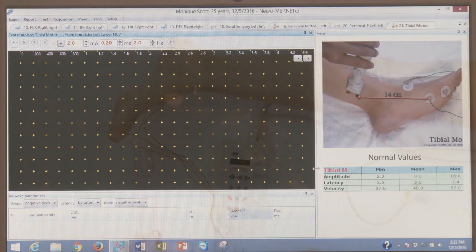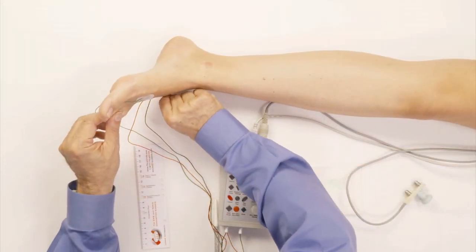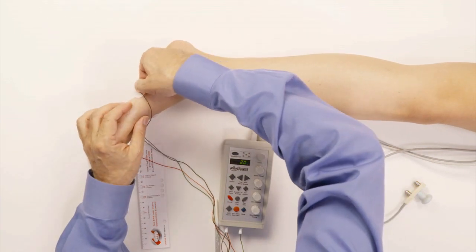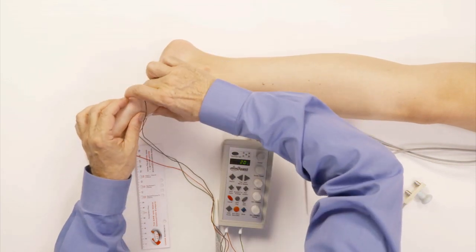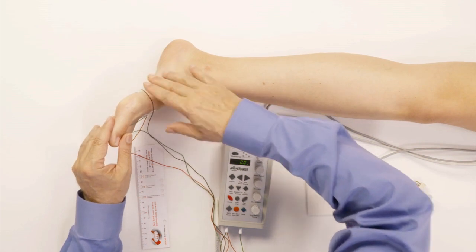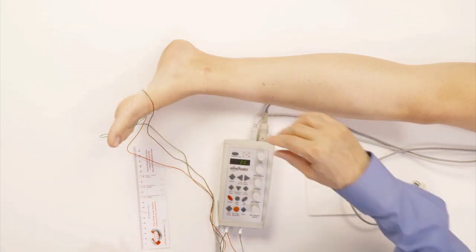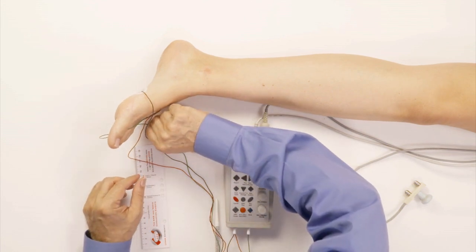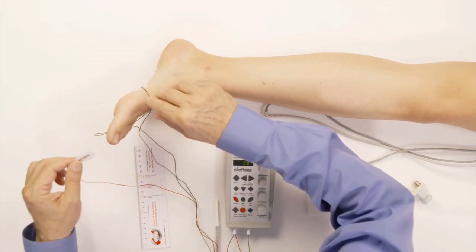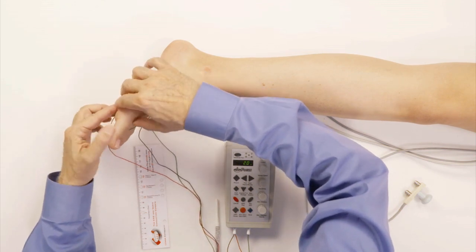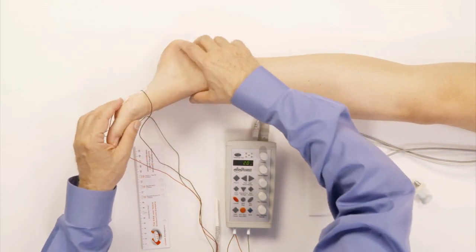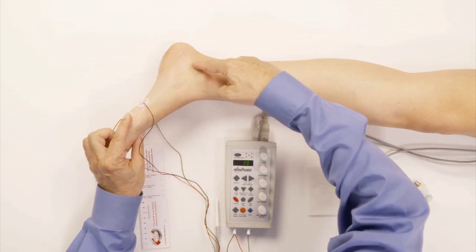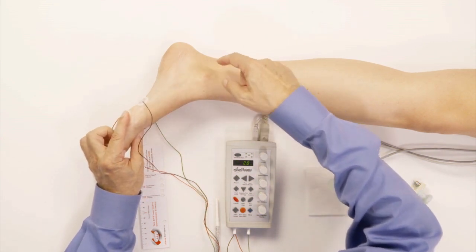I'm going to take the electrodes from where they were here. This is where the abductor hallucis muscle is. We call it abductor hallucis, or AH. We're going to put the red electrode right here on the bone itself.